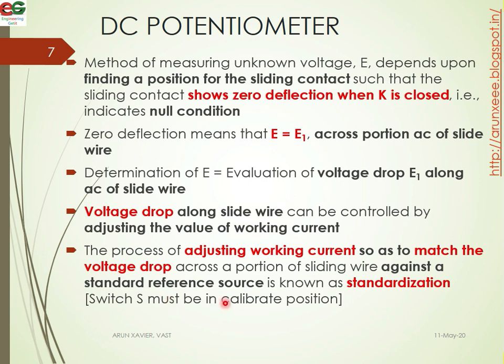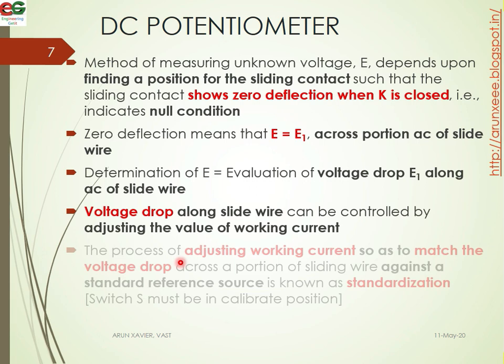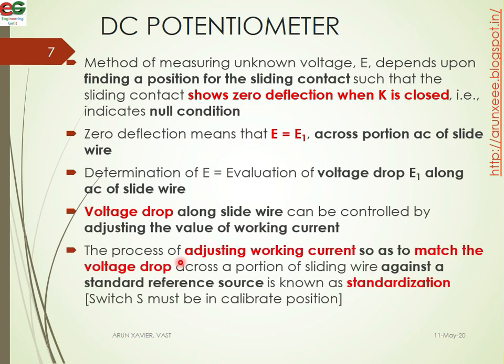The process of adjusting the working current so as to match the voltage drop across the position of the slide wire against the standard reference is known as standardization. For standardization, S must be in the calibrate position. Then we change to the null value condition, adjust switch K1, and then change switch S to the operating position.